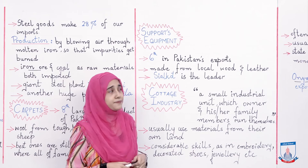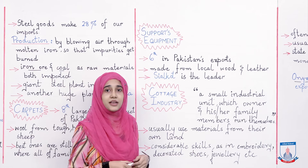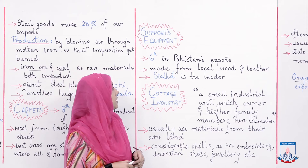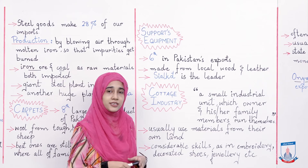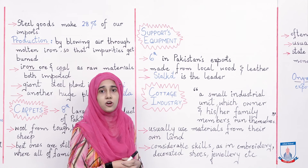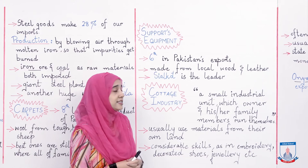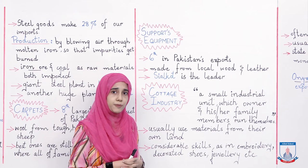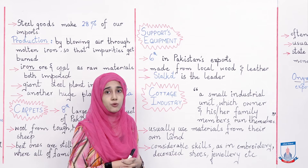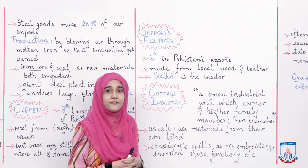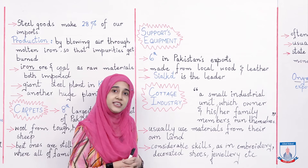Ab hum baat karte hain sports equipment ki. Pakistan ki exports mein sports equipment ka number 6 hai. Yeh local wood aur leather se banai jati hai. Sialkot is the leader — Pakistan mein jahan par sabse zyada sports equipment banai jati hai woh hai Sialkot. Pakistan ke sports equipment duniya bhar mein bahut mashoor hain — yahan tak ke FIFA World Cup mein jo football use kiya gaya hai woh bhi Pakistan se hi jata hai.